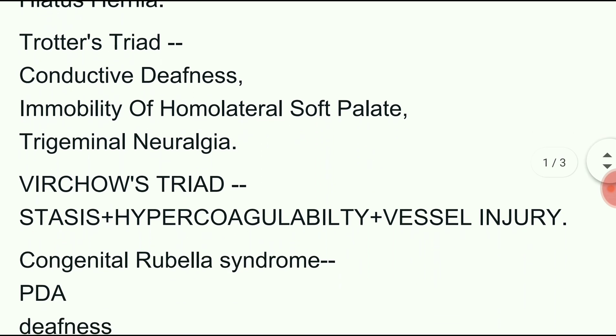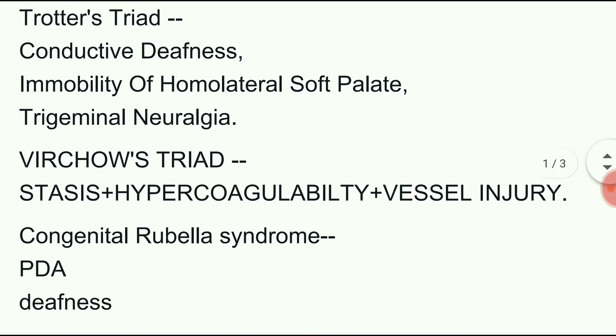Next triad is congenital rubella syndrome. It includes PDA, deafness and cataract.